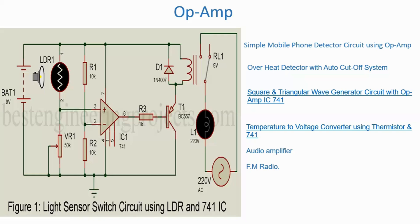Before the practical, let me tell you where we use this IC. You can make a simple mobile phone detector circuit using an operational amplifier — for example, in an examination hall to detect if somebody is carrying a mobile phone. You can also make an overheat detector with auto cutoff system, a square and triangular wave generator using 741 IC, temperature-to-voltage converters using a thermistor, audio amplifiers, and FM radio circuits.